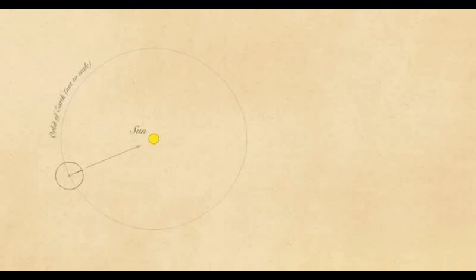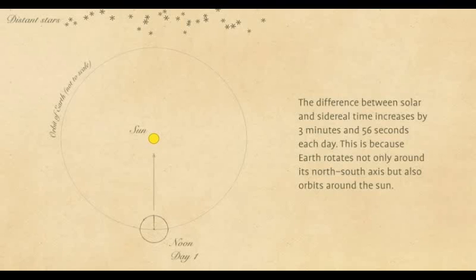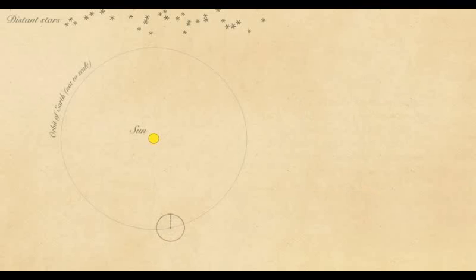But because the Earth orbits around the sun about one degree every day, the Earth actually has to rotate a little bit more than 360 degrees for the sun to be directly overhead at the same place. A full 360-degree rotation in relation to the distant stars is actually a little bit shorter than 24 hours, about 23 hours and 56 minutes. This is called a sidereal day.